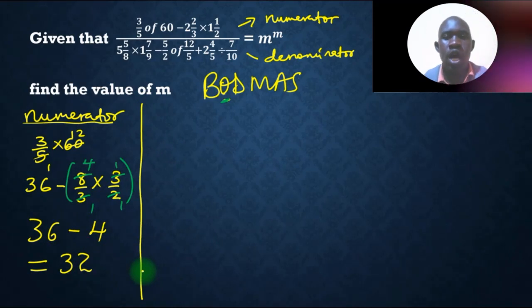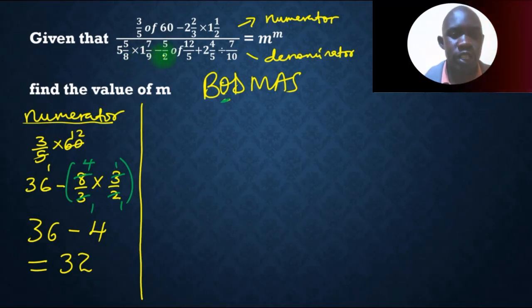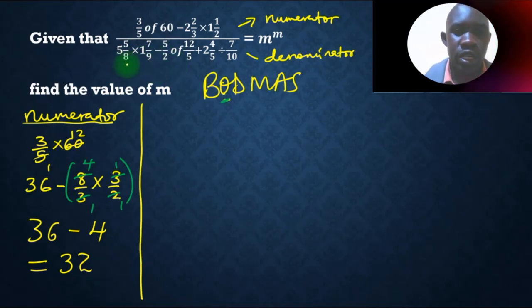Then we move on and we deal with the denominator. Since most of the values here are in mixed fraction, we write them as improper fraction. So if we write it as improper fraction, we shall have, this is 8 times 5, 40, 40 plus 5, that is 45 over 8.